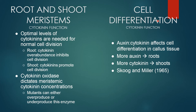Cell differentiation: auxin and cytokinins affect cell differentiation in callous tissue. More auxin leads to rooting, whereas more cytokinin leads to shoots. This was observed by Murashige and Miller in 1965.